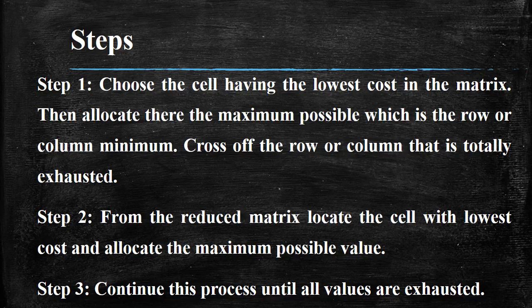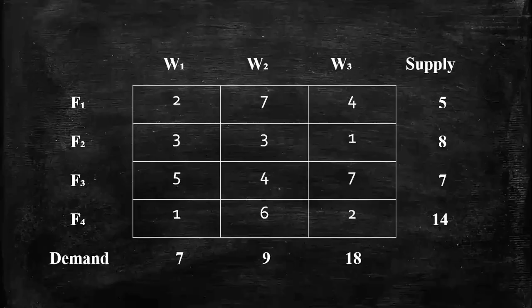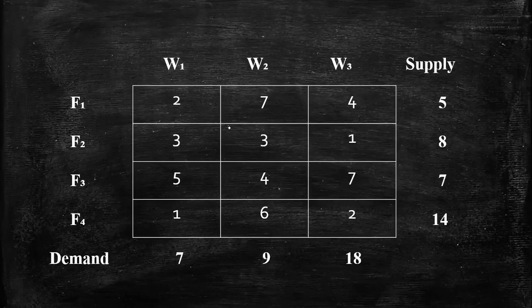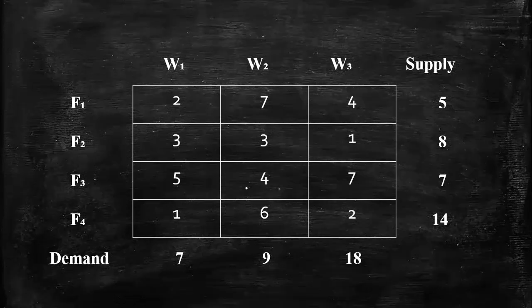We continue doing supply and demand allocations until we must stop. This is the basic procedure for the lowest cost entry method. We identify the lowest value in cell A and perform the allocation. We repeat this until the entire transportation problem is resolved, including any unbalanced transportation cases.